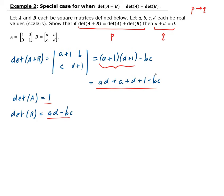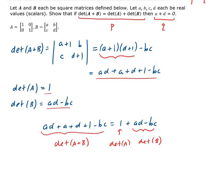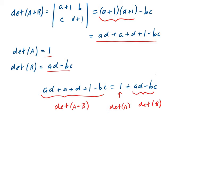Let's equate these. We have AD plus A plus D plus 1 minus BC equals 1 plus AD minus BC. This is the determinant of A plus B on the left, and the sum of the determinant of A and the determinant of B on the right.